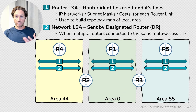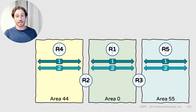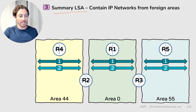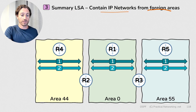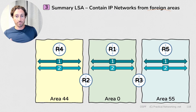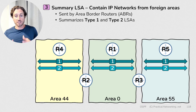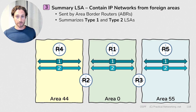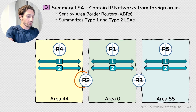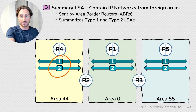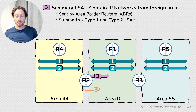With that said, we can now talk about Type 3 LSAs. Type 3 LSAs are known as Summary LSAs, and they contain the IP networks from foreign areas. They're going to be sent by the ABRs — Router 2 and Router 3 in our topology — and they summarize the information that exists in the Type 1 and Type 2 LSAs from each area. For example, Router 2 is going to summarize all the information in the Type 1 and Type 2 LSAs from Area 44 and send that into Area 0 as Type 3 LSAs.